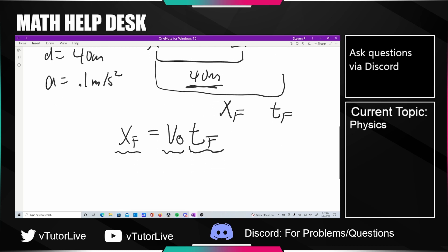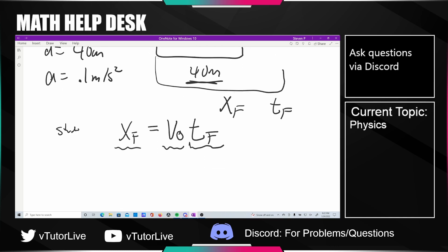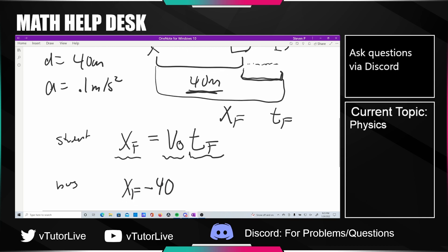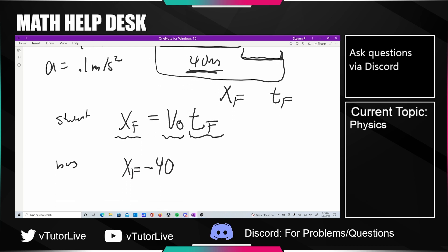For the bus it's going to look like X_f minus 40, because the bus is only going to travel a smaller piece of distance. X_f minus 40 is going to be equal to, let's call it velocity initial of the bus or velocity not of the bus times t_f.